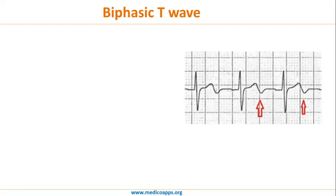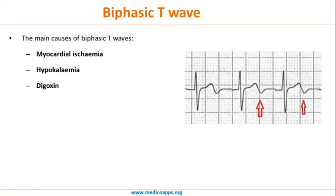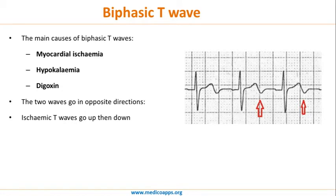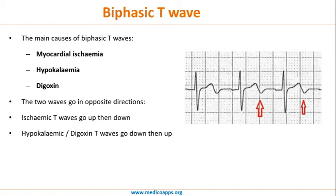Biphasic T waves — the T wave first goes up and then down, or vice versa, first down and then up. The main causes of biphasic T waves are myocardial ischemia, hypokalemia, and Wellens syndrome. Ischemic T waves typically go up first and then down, whereas hypokalemic or Wellens T waves go down and then up. However, these are general patterns, and the key point is that when you find a biphasic T wave, one of these three conditions may be the cause.